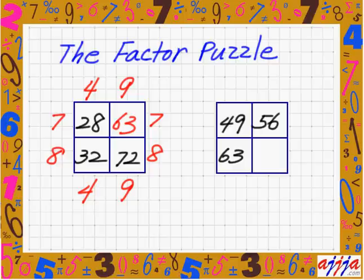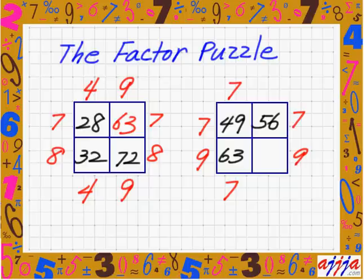What about the 49 and 63? Must be 7, right? That's right — 7 and 7. 7 times what is 49? 7 again. What is 7 times what is 63? That's right, 9. So 9 must be here. 7 must be right there. Now, 7 times what is 56? That's 8 right there. That means I must have 8. Then 8 times 9, which is 72. Great.